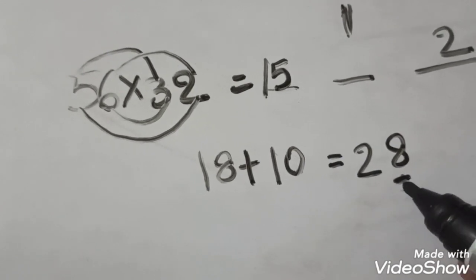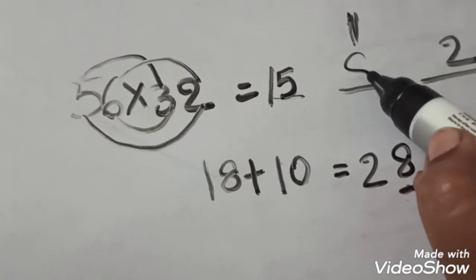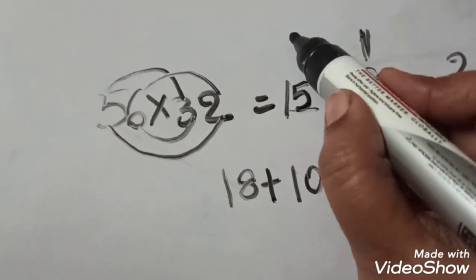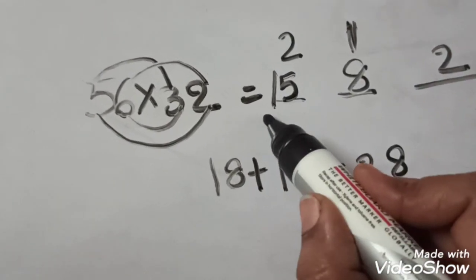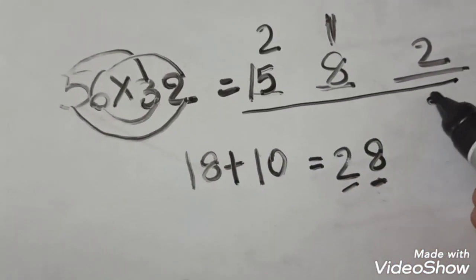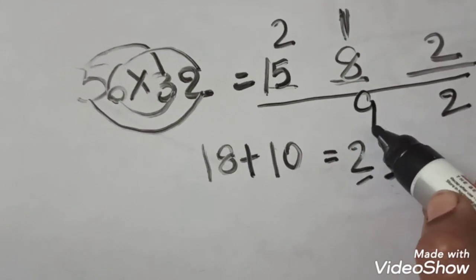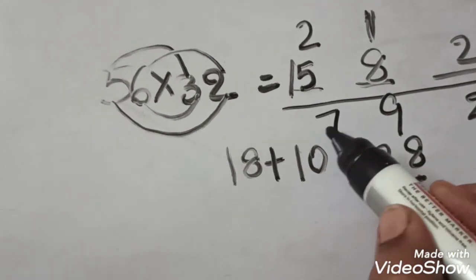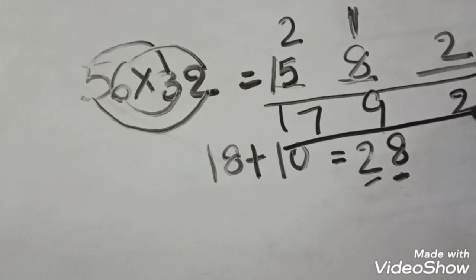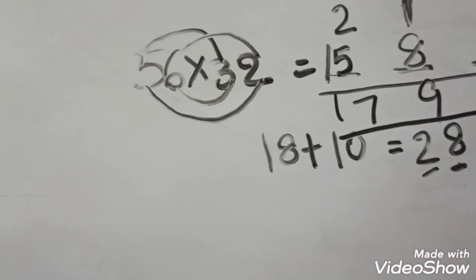So we write the 8 here and 2 here. Now we should add: 2, 9, 7, 1. 1792.